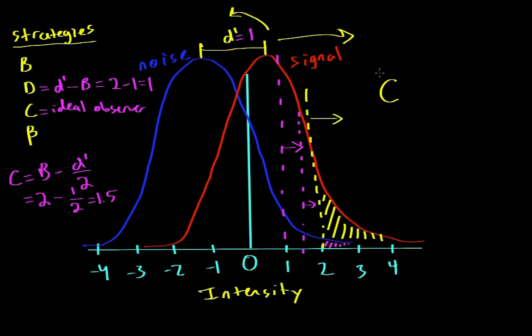And so we said over here that the c variable is indicative of the strategy that a person uses. So when c equals 0, then the participant is an ideal observer. If c is less than 1, we say that the participant is liberal. And if c is greater than 1, we say the participant is conservative in their strategy. And this would be ideal.